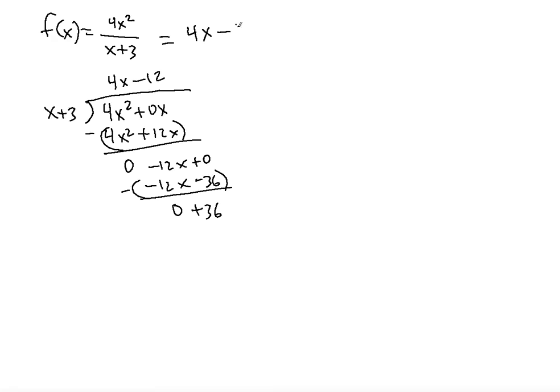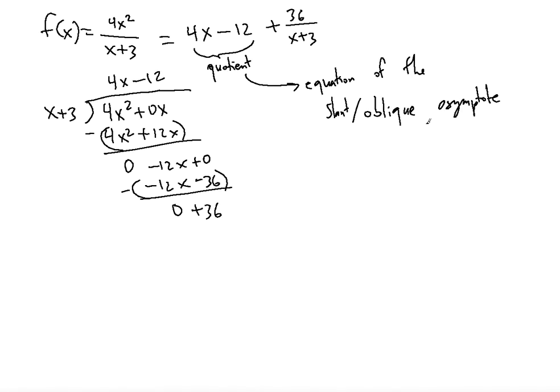So now you can express this as 4x minus 12, that's the quotient, and then the remainder will be added and divided by the divisor still. So what is going to be the oblique asymptote? It's going to be this. That's going to be the equation of the slant or oblique, because there's another name for slant as well, asymptote.